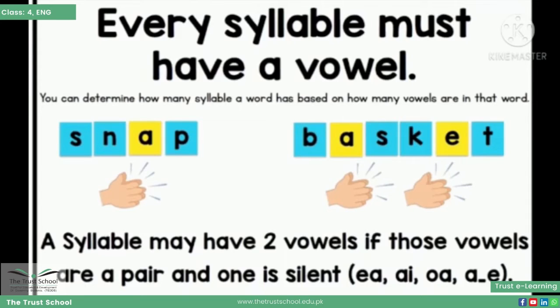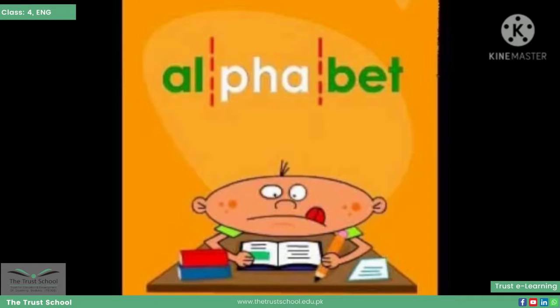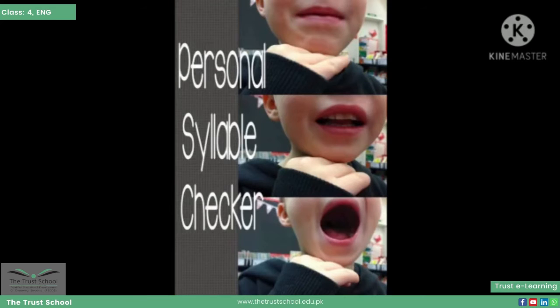Har syllable mein ek vowel sound honi chahie. Take another example: 'alphabet'. Is example mein 'alphabet' word bolne ke liye aapko awazon ke teen tukre istamal karne pade — 'al', 'pha', 'bet' — isliye iske number of syllables three hain. Also notice, each syllable has a vowel in it. Syllable count karne ka ek tariqa ye bhi hai.